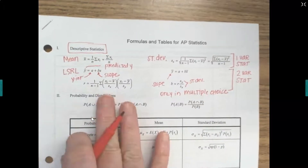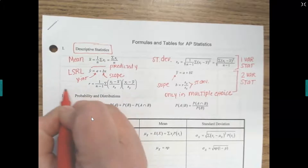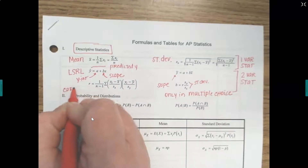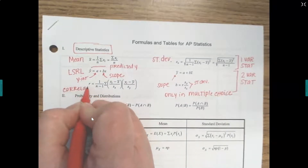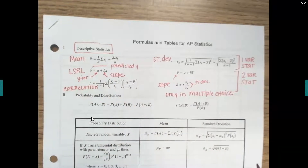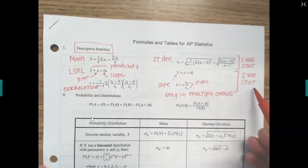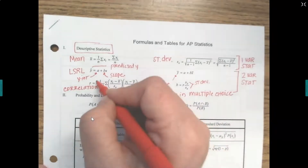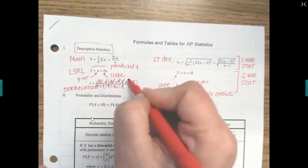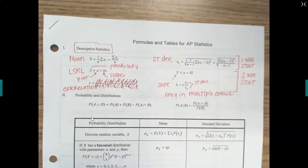This big long formula is for correlation. You will never need to calculate this by hand — it'll either be given to you, or you'll have the data to run two-variable stats and get your correlation coefficient. Just cross it off, because you're not ever going to use that by hand for AP stats.